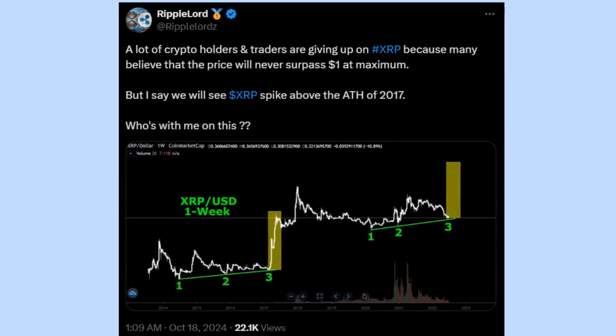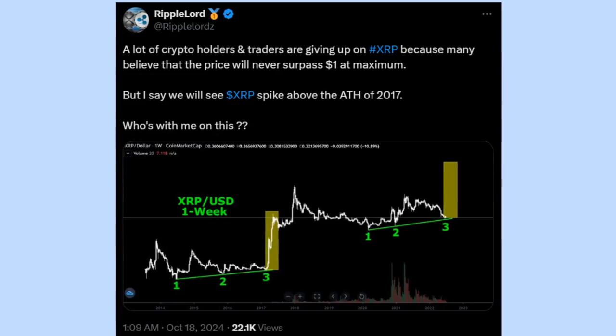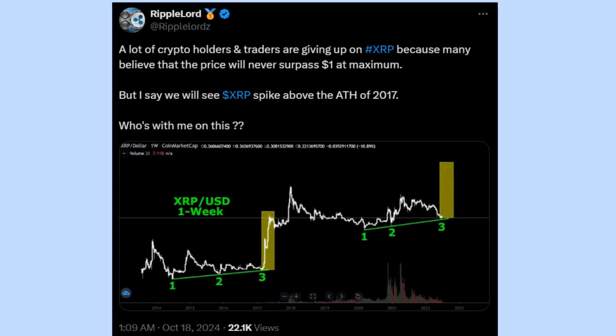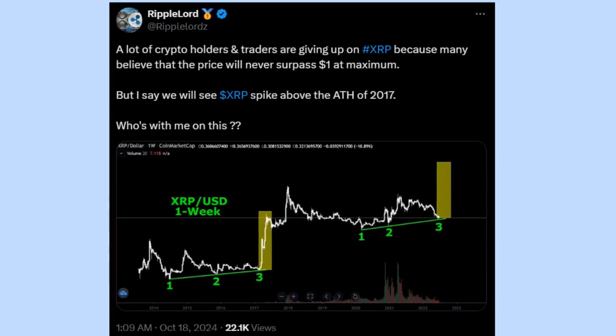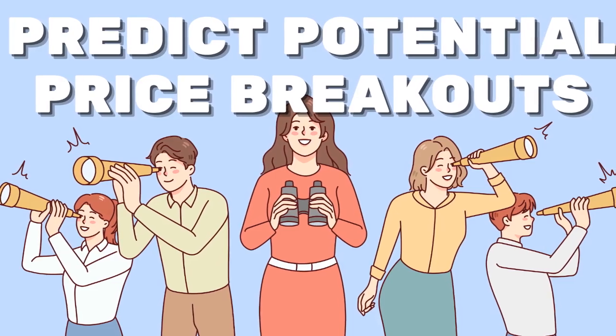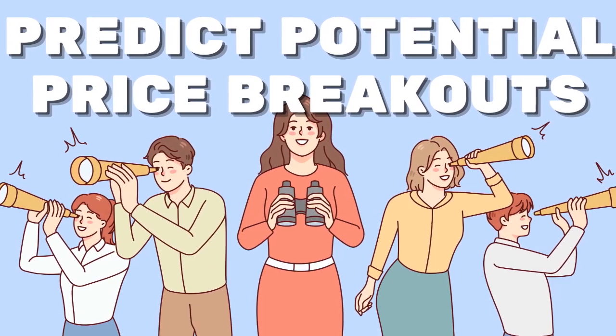Yet, he followed up with a bold prediction. I say we will see XRP spike above the all-time high of 2017. His confidence stems from an analysis of XRP's position within the Bollinger Bands, a technical indicator often used to predict potential price breakouts.